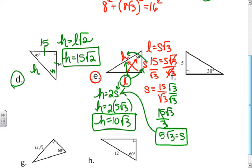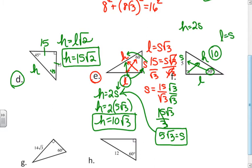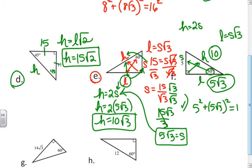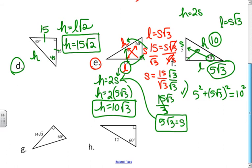In example F, I know the 30-degree angle and the short leg is 5. The hypotenuse is two times the short leg, so the hypotenuse equals ten. The long leg is the short leg times the square root of three, so the long leg is five square roots of three. You can check: five squared plus (five square roots of three) squared has to equal ten squared. That's a nice way to verify your answer.